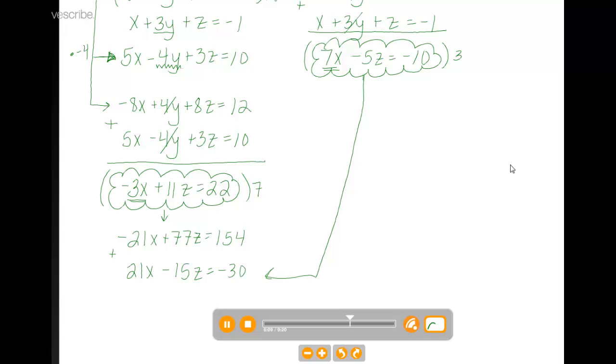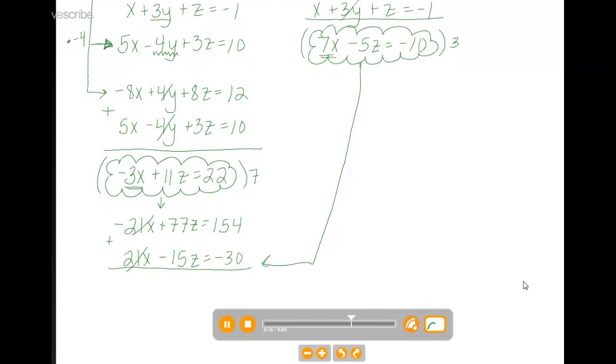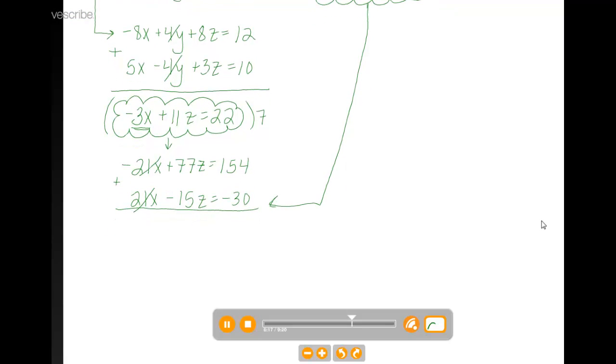And when we add those together, our x's eliminate. Negative 21x plus 21x is 0x. 77z minus 15z is 62z. And 154 plus negative 30 or minus 30 gives us 124. When we solve for z, we would divide both sides by 62, and we get that z is equal to 2.